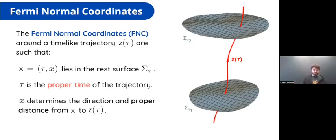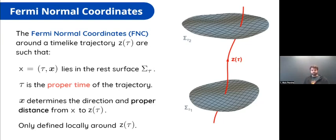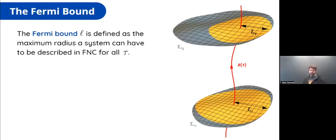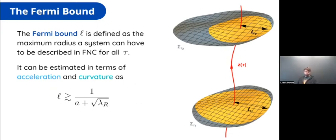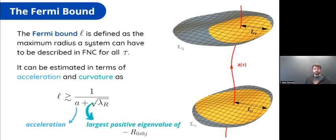These are the key properties of the Fermi normal coordinates. Something very important is that these coordinates are only locally defined around the trajectory — acceleration of the curve and curvature of spacetime may actually prevent these coordinates from being globally defined. Using this, the next step is to estimate the maximum size that a system can have so that it can be described in Fermi normal coordinates. This Fermi bound is the maximum radius, and we can estimate it in terms of the acceleration and the negative eigenvalues of the induced curvature in the surface. This estimate establishes a regime of validity for our description of localized non-relativistic quantum systems.